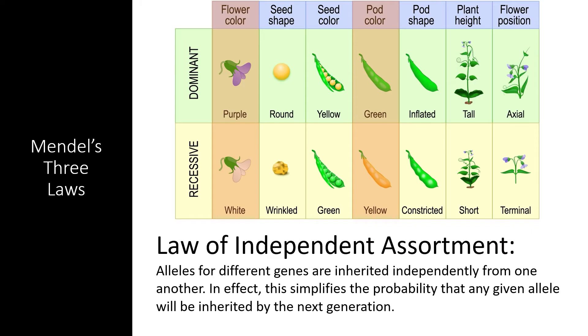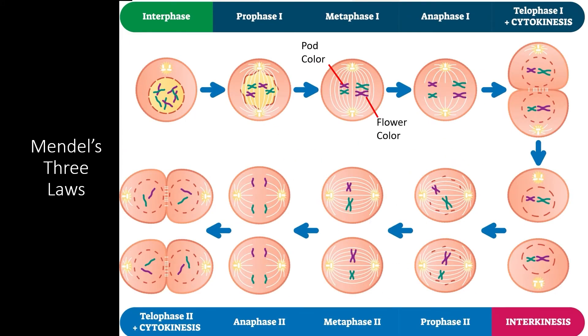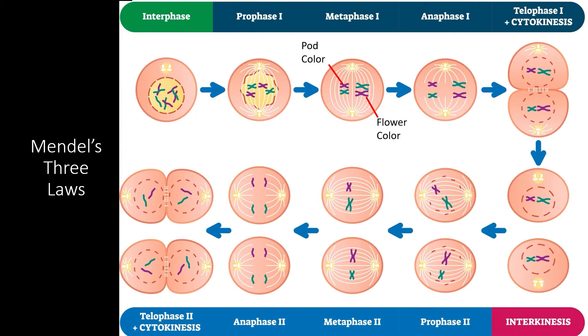While Mendel got lucky and chose many traits that were not physically linked, we know now that the Law of Independent Assortment is only true of genes that are located on separate chromosomes. If genes are located on the same chromosome, there is actually a good chance that they will be inherited together. These processes were covered previously in section 5.2 if you need a quick refresher.